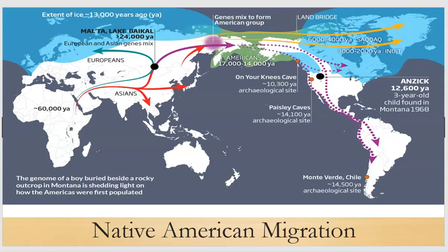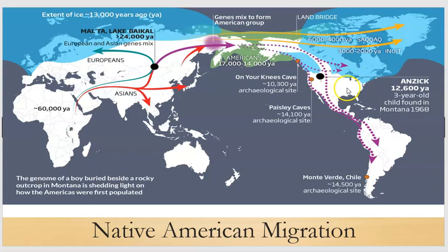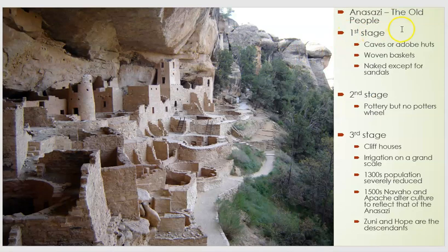Since we've talked about arrival into the Americas, we need to focus primarily on Native Americans in the United States area. There are literally hundreds of Native American tribal organizations that exist in this region alone, and this course is not long enough to go through all of them. So instead, I'm going to present a variety of them, showing you that they are very unique and very interesting. The first we'll talk about is in the southwest of the United States, in what is currently the Arizona and New Mexico region.